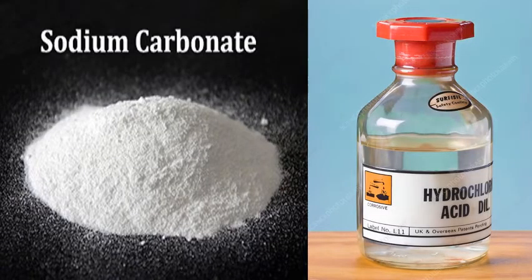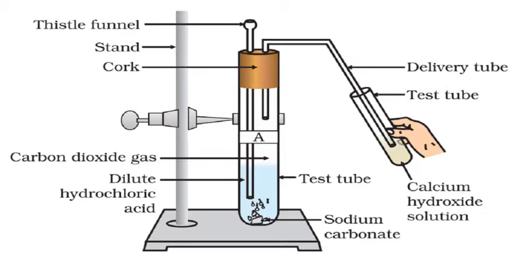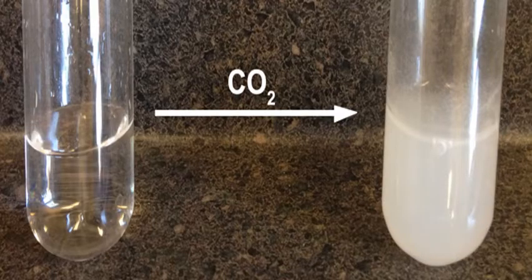For instance, if we take 0.25 gram of sodium carbonate in a test tube and then add 2 milliliter of dilute hydrochloric acid to it, we will observe that carbon dioxide will be evolved with brisk effervescence, which means there will be rapid evolution of gas. To check the presence of carbon dioxide, we will pass the gas through lime water and it will turn milky.